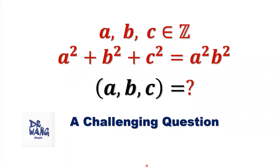Hello, everyone. I'm Dr. N. Here is the question. If A, B, and C are integers, A squared plus B squared plus C squared equals A squared times B squared, what are the values for A, B, and C?